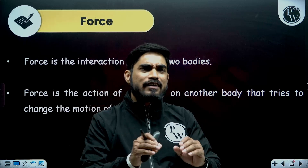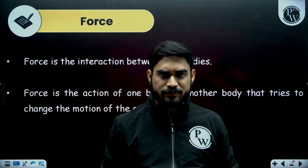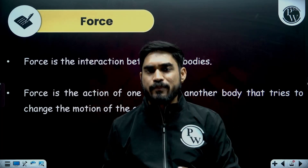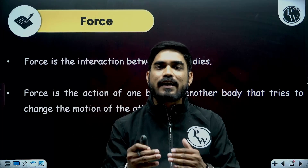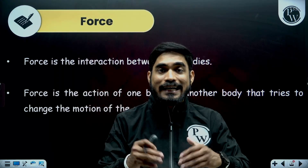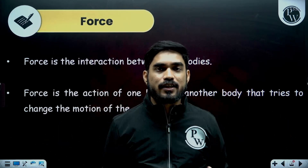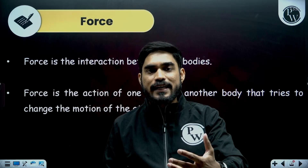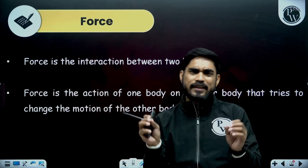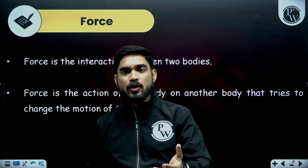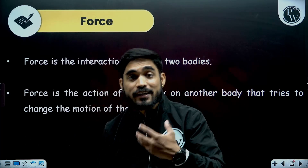Whenever there are structures or machines, several members are connected together. A structure or a machine is made of several members which are connected together. These members are interacting with each other — they are pulling each other, they are pushing each other. This pulling and pushing is called interaction. So two members are interacting with each other. If I want to show how they are interacting, whether they are pushing or pulling, I will show that using forces.